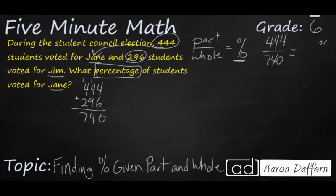Now we can find our percent. This fraction here is a division problem, so let's just divide 444 by 740. You can take any fraction and turn it into a decimal simply by dividing the numerator into the denominator, and from a decimal it's easy to get to a percent. We know 740 is not going to go into 444, but we can add a decimal and a zero to extend that. Now we need to do a little bit of estimation. I know that 7 times 5 is going to be 35.